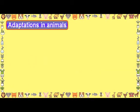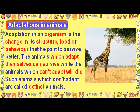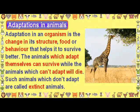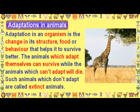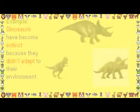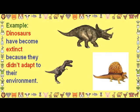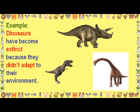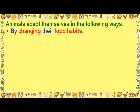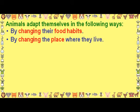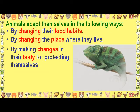Adaptations in animals: Adaptation in an organism is the change in its structure, food or behaviour that helps it to survive better. The animals which adapt themselves can survive, while the animals which can't adapt will die — such animals are called extinct animals. Dinosaurs have become extinct because they didn't adapt to their environment. Animals adapt themselves by changing their food habits, by changing the place where they live, or by making changes in their body for protecting themselves.